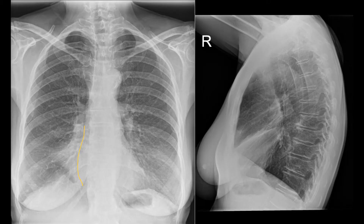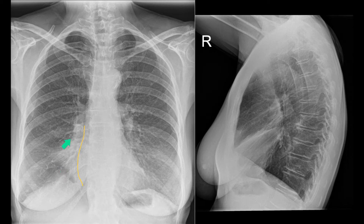This is where the right heart border should be, and the collapse is almost triangular, presumably because of the angle at which the x-ray hits the interface — it's almost tangential in places. Otherwise, you just get this hazy, increased density, which makes the right heart border invisible.